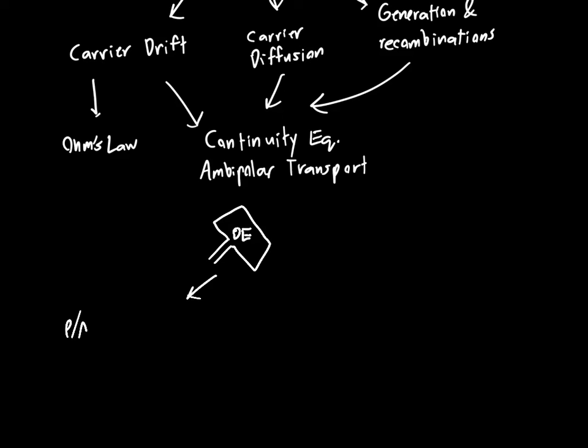We're going to use that to analyze PN junctions. Once we analyze PN junctions, we'll be able to understand things like diodes, which often are just PN junctions. Things like MOSFETs and BJTs, which collectively are known as transistors. There's other kinds of transistors as well, but these are two of the big ones.